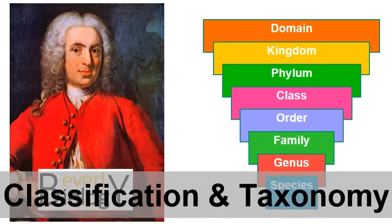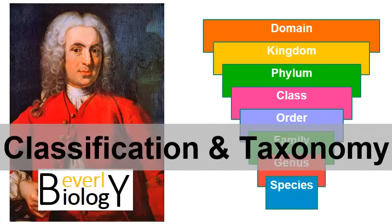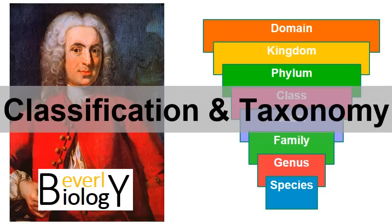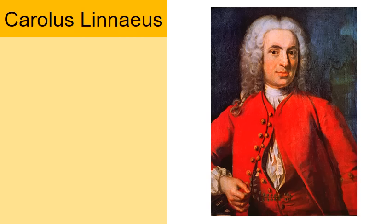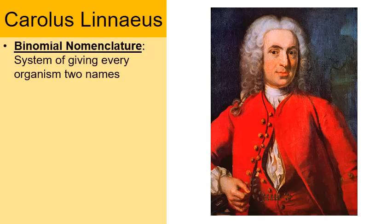The topic of this video is classification and taxonomy. When we talk about classification and taxonomy, we should really start with Carolus Linnaeus. What he's most famous for is creating the system called binomial nomenclature.